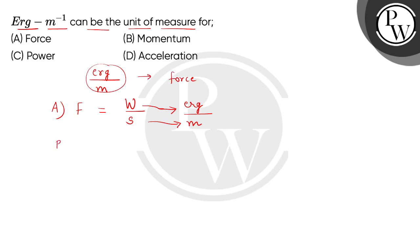But still for confirmation, we will be checking all 3 options. Next, we have momentum. Momentum, we can write mass multiplied by velocity, and we can write it as the product of force and time. So here we will get the SI unit - mass is kg and velocity is meter per second. Then force is newton and time is second.